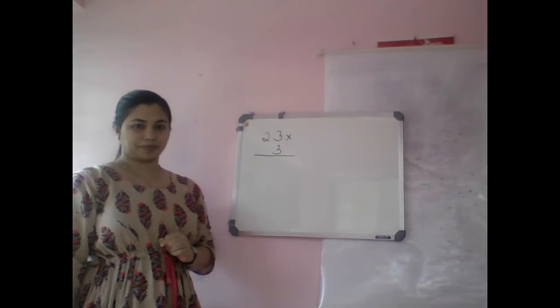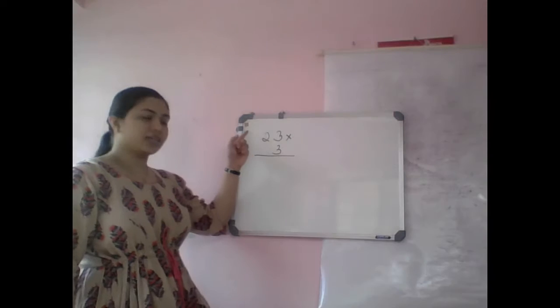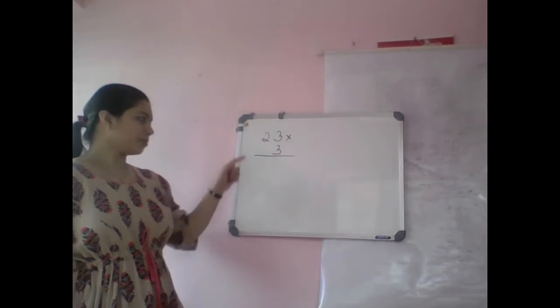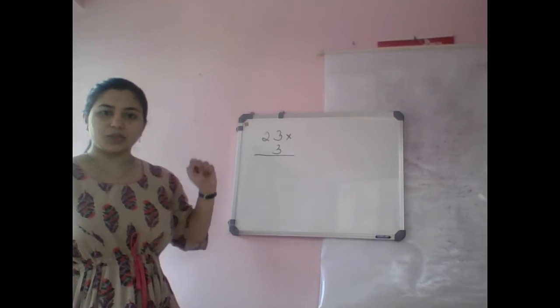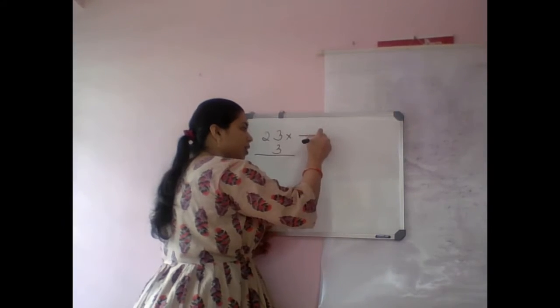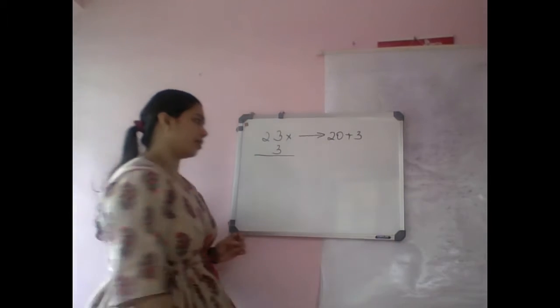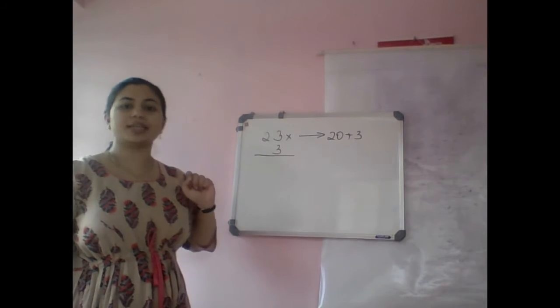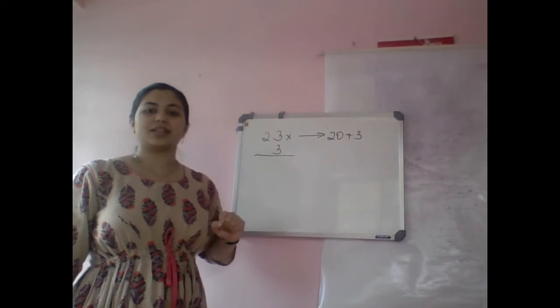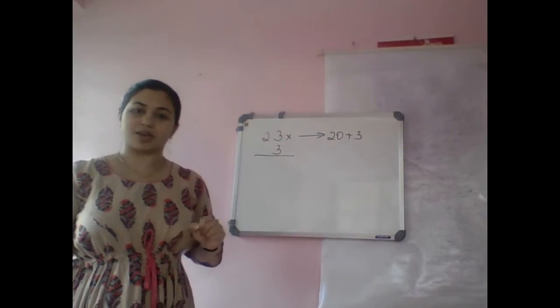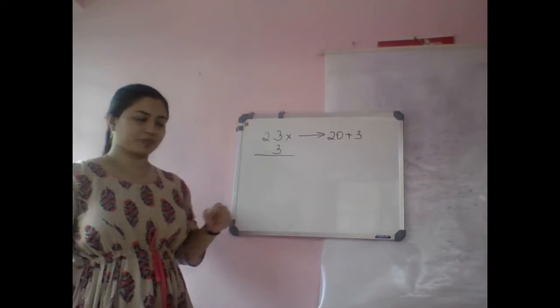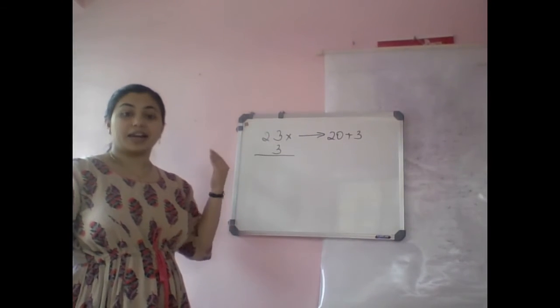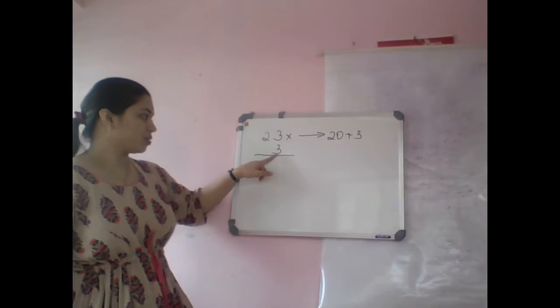Twenty-three into three. Twenty-three is a two-digit number and three is a one-digit number. Twenty-three is twenty plus three. Since this is a two-digit number, this is one-digit and two is in the tenth digit. Twenty-three is actually twenty plus three, or two into ten plus three. In multiplication, we are doing it from left to right. So first, we'll do it.